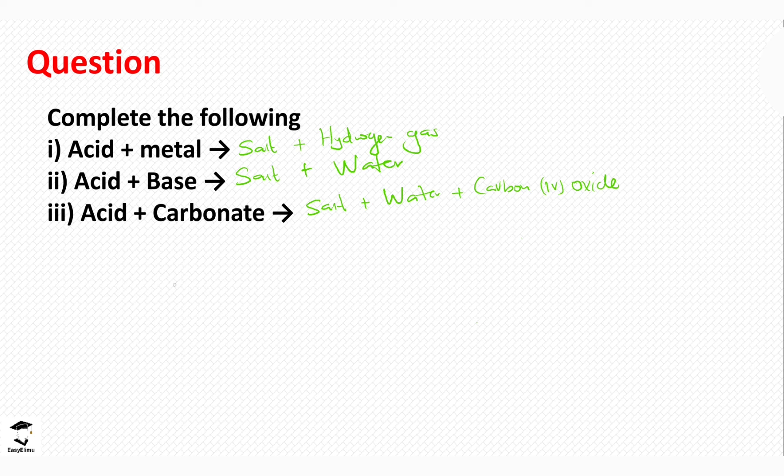In both reactions — acids with carbonates and acids with hydrogen carbonates — the products will always be the same. Those are the three general reactions of acids. Make sure you are able to remember them and can give examples for each one. In the next session we are going to discuss applications of acids and bases, and dive into questions commonly tested in exams. See you in the next session.